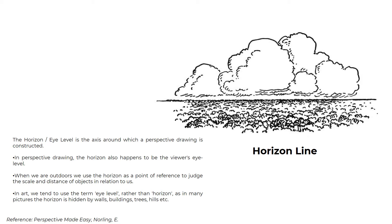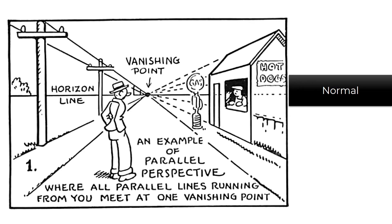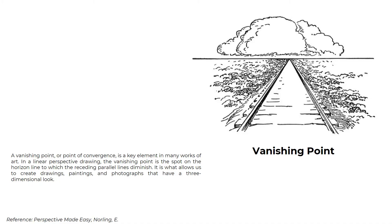In art, we tend to use the term eye level rather than horizon, as in many pictures the horizon is hidden by walls, buildings, trees, hills, etc. This is your horizon line — how you point your horizon line in the normal view and the variation if it's a high horizon or a low horizon line. A vanishing point or point of convergence is a key element in many works of art. In a linear perspective drawing, the vanishing point is the spot on the horizon line to which the receding parallel lines diminish. It is what allows us to create drawings, paintings, and photographs that have a three-dimensional look.